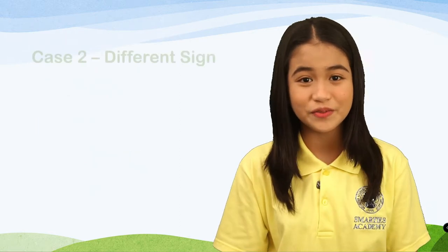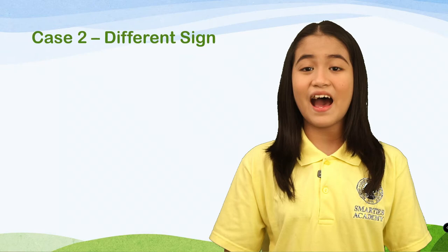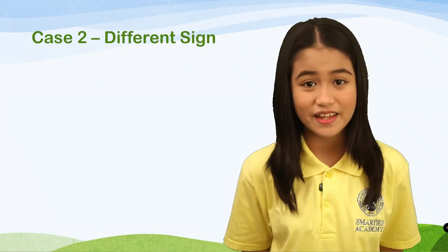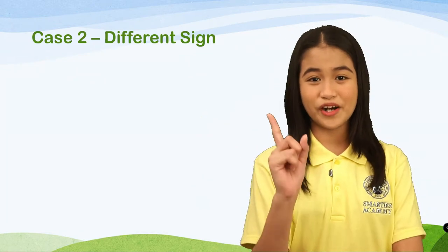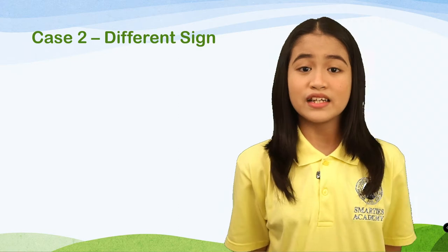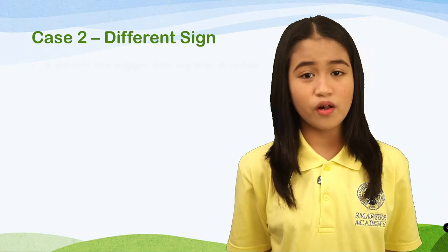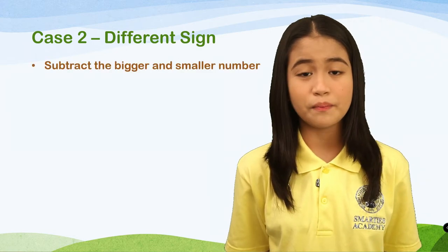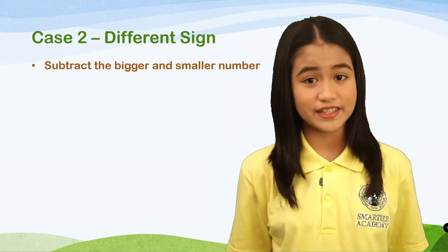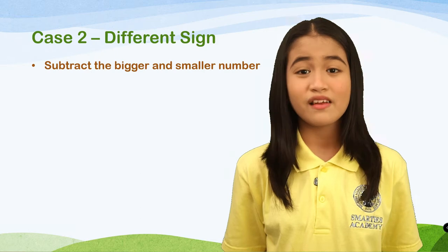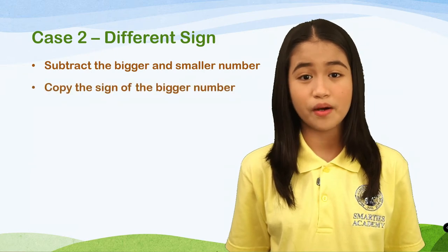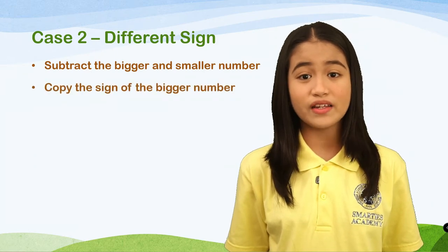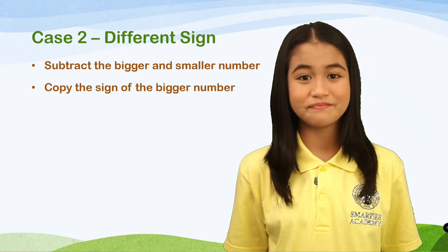Now let's talk about Case number 2 — adding integers with different signs. Subtract the smaller number from the bigger number regardless of the sign. Afterwards, we will copy the sign of the bigger number or the highest absolute number.